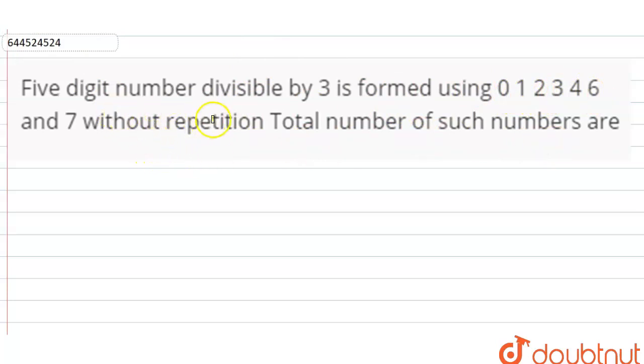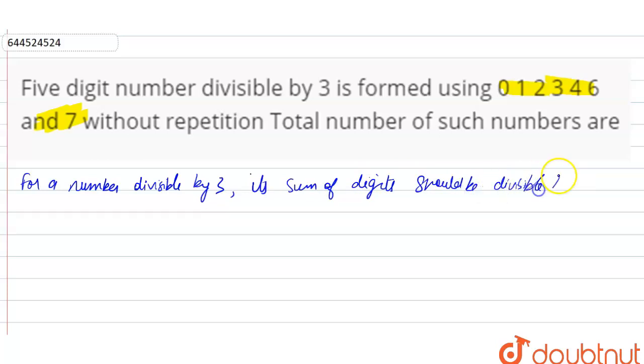So we have to form 5 digit numbers which are divisible by 3 by using these numbers without repetition. Now if a number is divisible by 3, we know the condition for a number divisible by 3 is that the sum of digits should be divisible by 3. So now we will make groups according to these digits so that it should be divisible by 3. Selection of digits can be...